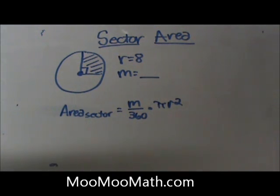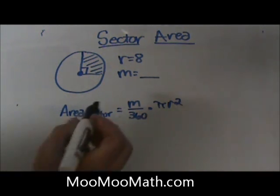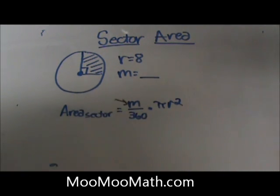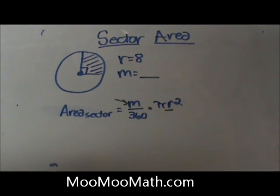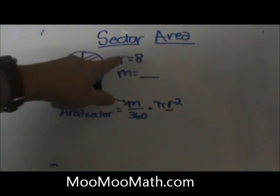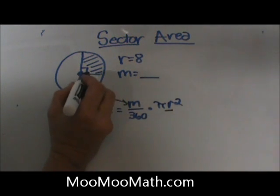We need two pieces of information to be able to find sector area. That's m, the measure of the angle, and r, the radius of the circle. I've given you the radius is 8. We're going to go onto our diagram and label 8 for the radius.